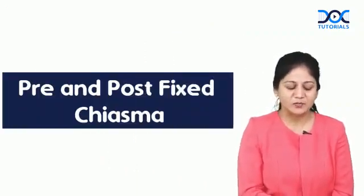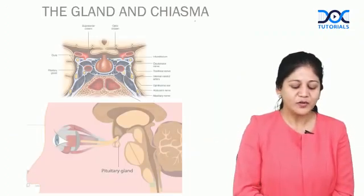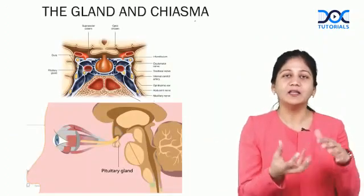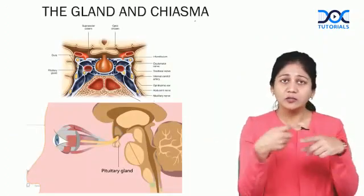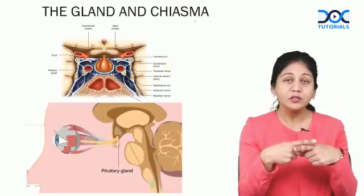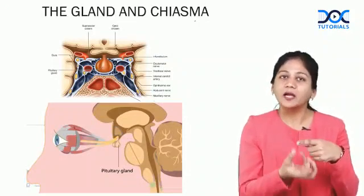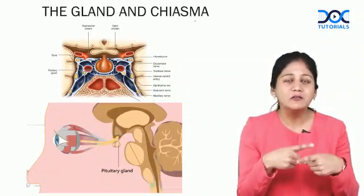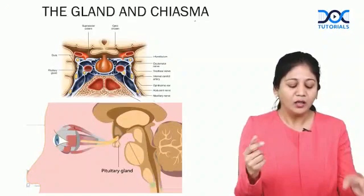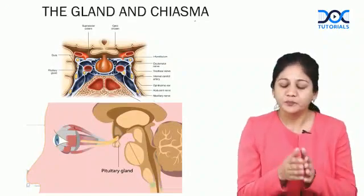Welcome to Quick Learning Bites on Doc Tutorials. Today's quick learning bite in ophthalmology is about pre and post-fixed chiasma. The pituitary gland is just beneath the chiasma where the crossover occurs. When you have a pituitary macroadenoma, it is going to compress the central chiasma — the inferonasal fibers first.